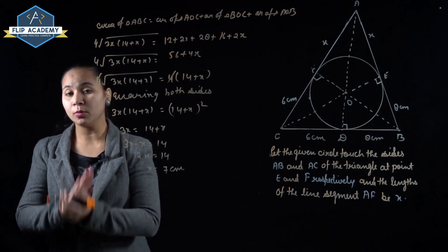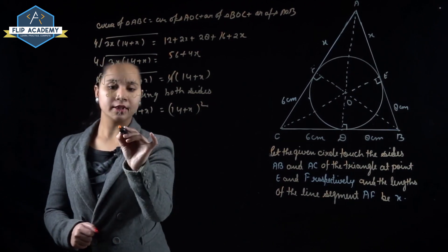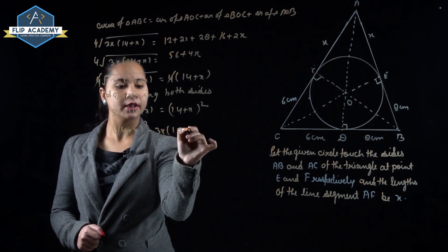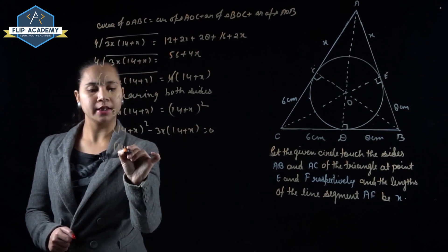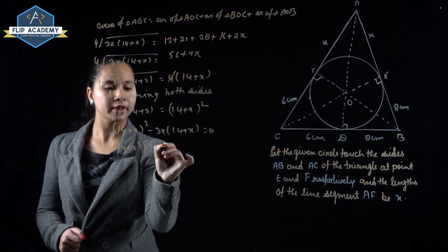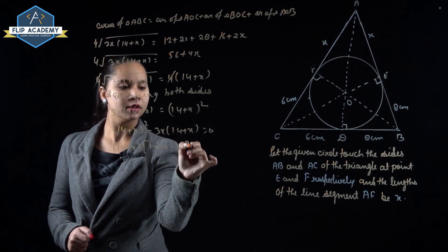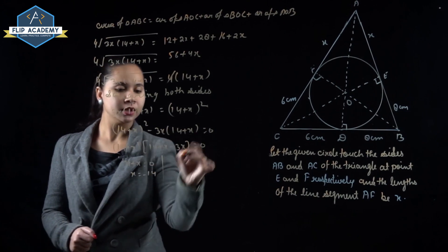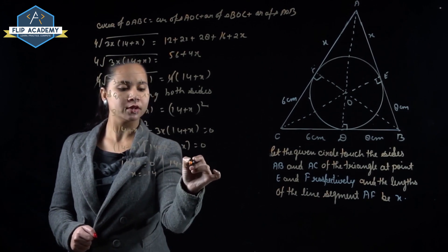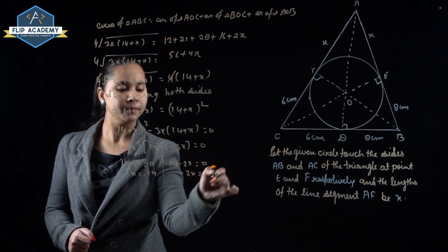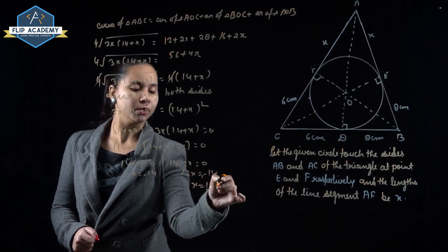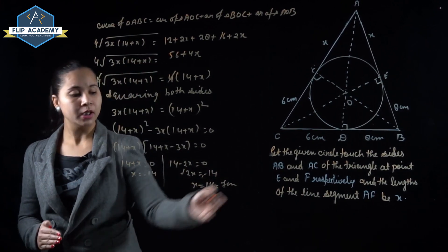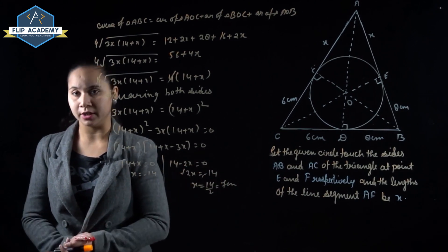Alternatively, expanding the squared equation: (X+14)² minus 3X(X+14) equals 0, so (X+14)(X+14−3X) equals 0, giving (X+14)(14−2X) equals 0. This gives X equals −14 (rejected, negative not possible) or X equals 7 cm. So X equals 7 cm.